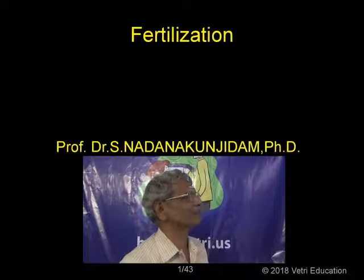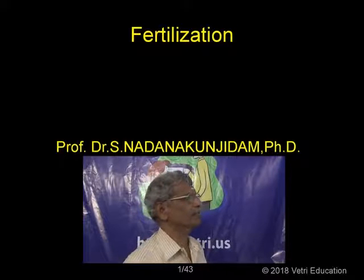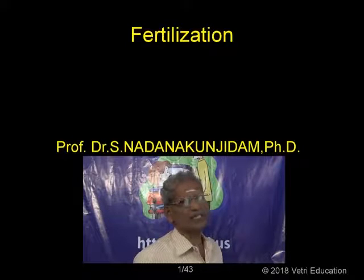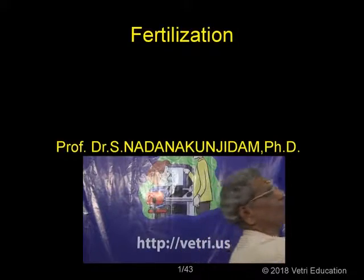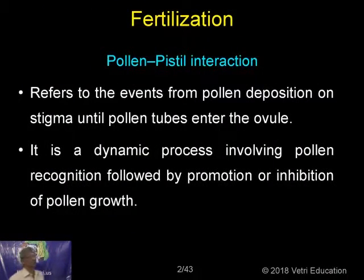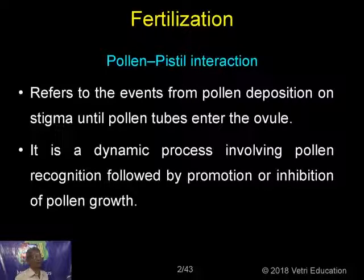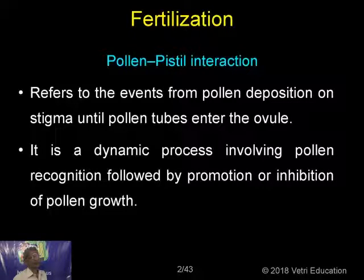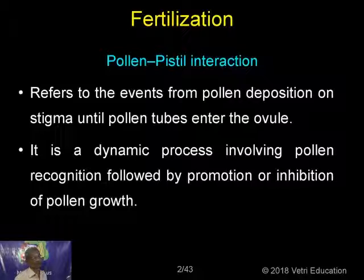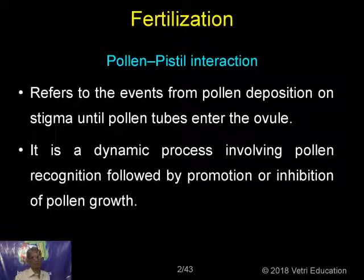Good morning, my dear students. Today, the topic for our discussion is fertilization. What is fertilization? Fertilization is the mating of a male gamete and a female gamete. When the pollen is discharged from the anther, it finds a place on the stigmatic surface. The stigmatic surface, if it admits the pollen as a right pollen, allows the pollen to develop a pollen tube. The pollen tube elongates, grows through the style, and finally reaches the egg. So, the mating of the male gamete and the female gamete is what is called fertilization.